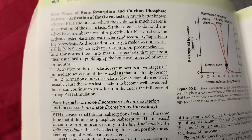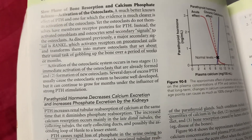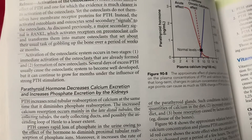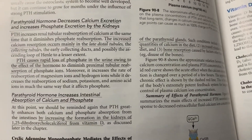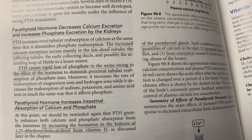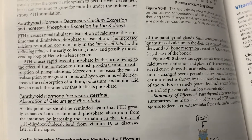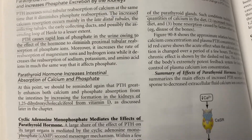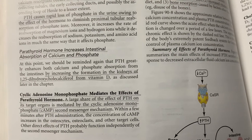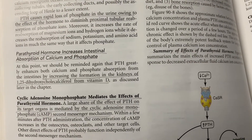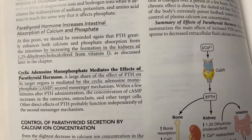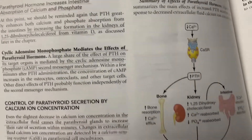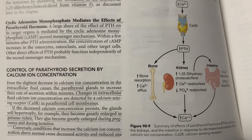In the slow phase, osteoblasts send signals to osteoclasts via RANK ligand, which binds to RANK ligand receptors on osteoclasts, causing maturation and differentiation, resulting in bone resorption. PTH also decreases calcium excretion and increases phosphate excretion by the kidneys. In the late distal tubules, calcium is reabsorbed and phosphate is excreted at a higher rate; at the proximal tubule level, phosphate is lost. PTH increases intestinal absorption of calcium and phosphate by increasing formation of vitamin D in the kidneys. A large share of PTH's effect on target organs is mediated by cyclic AMP, so cyclic AMP levels increase after PTH administration.